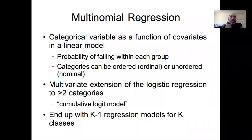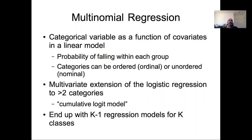In this video I'd like to continue our discussion of generalized linear models and specifically extend our previous discussion of logistic regression models, which are binomial models where there's two cases — a true or false, yes or no — to now a multinomial regression model where we consider more than two possible outcomes. Here we're generally dealing with categorical variables, trying to predict the categorical y as a function of some continuous x, modeling the probability of falling within each of multiple groups. Those categories might be ordered or unordered — ordinal or nominal data.